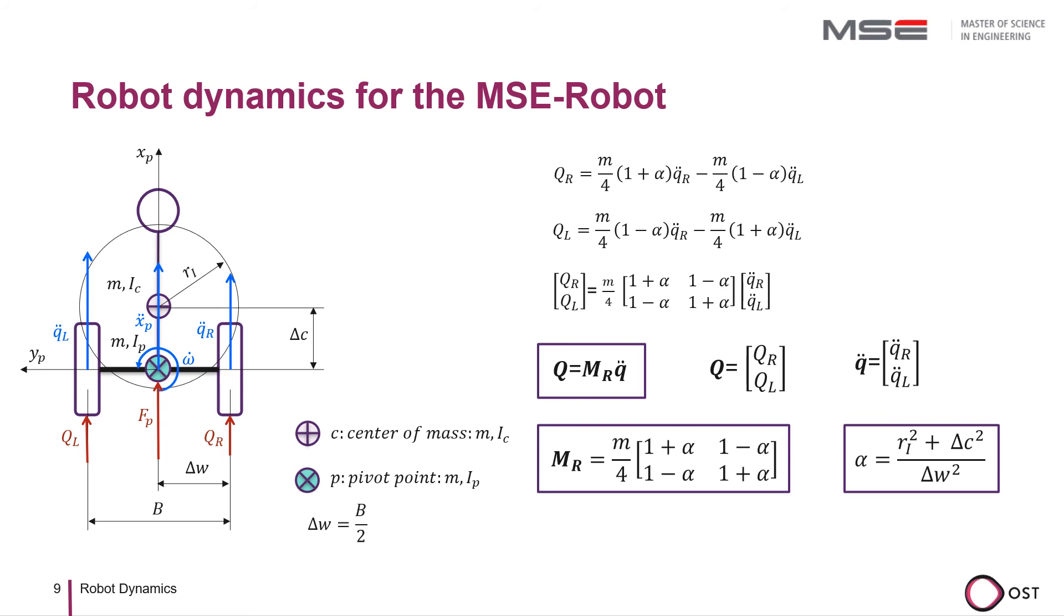The sum of Ri squared and delta C squared is essentially the radius of inertia squared around the pivot point. If half the wheel distance delta W is equal to this radius of inertia, alpha becomes 1 and both wheels feel half the mass each, which we presented earlier as a good approximation.